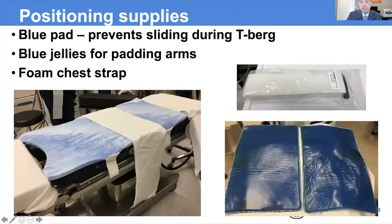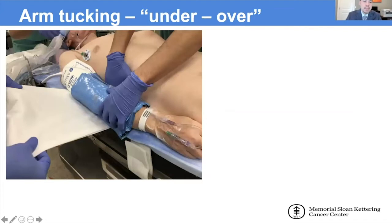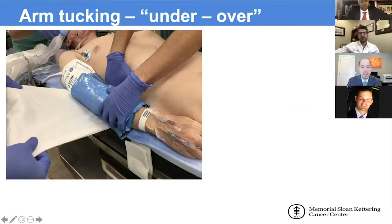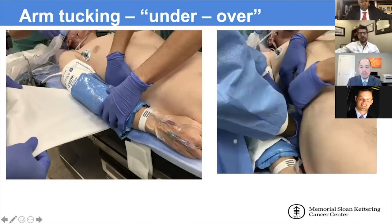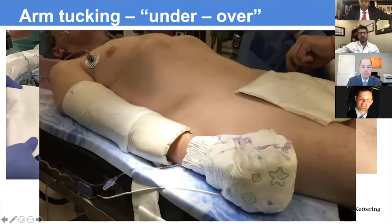Here are some of the supplies we use for positioning. We use a blue foam pad to prevent sliding during steep Trendelenburg. The jellies are for padding the elbows and securing the arms, and then a foam chest strap. This is the under-over arm tucking technique — we use a draw sheet, pull that under the arm and then over, and tuck that behind the patient.